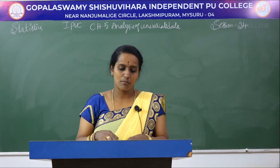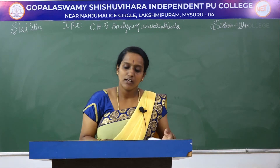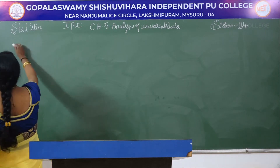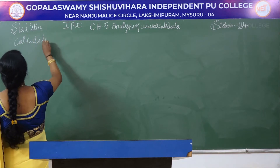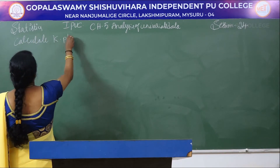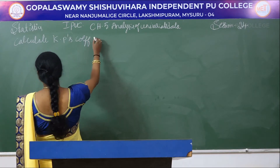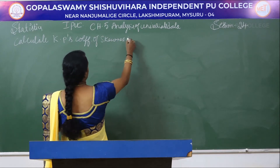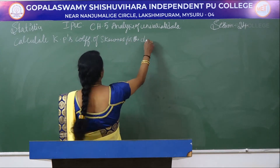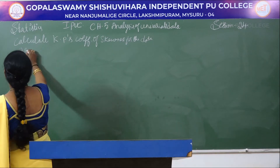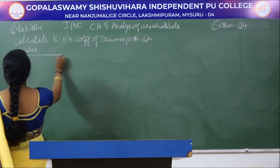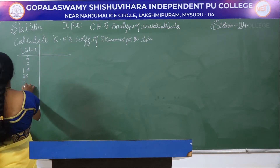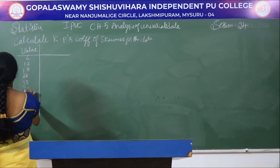The first problem: calculate KP's coefficient — that is Karl Pearson's coefficient of skewness — for the following data. The x values are: 6, 12, 18, 24, 30, 36, 42.